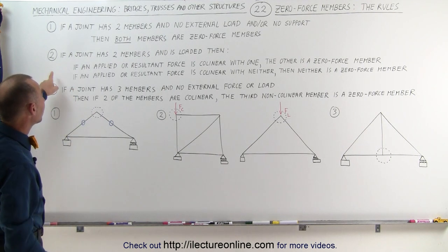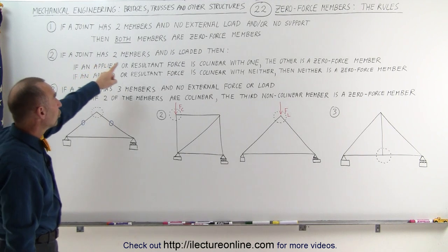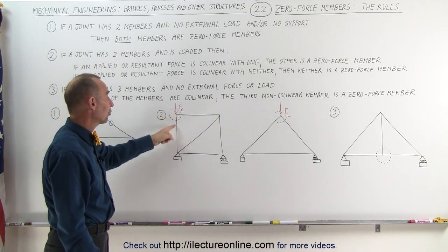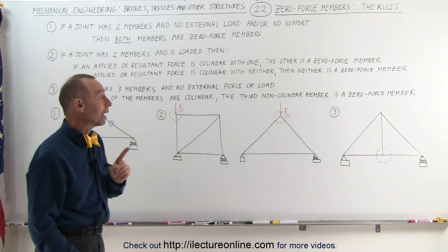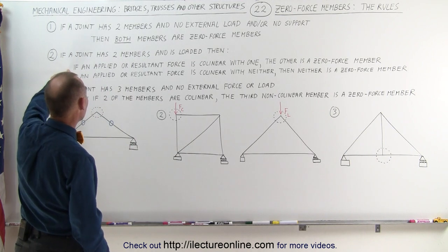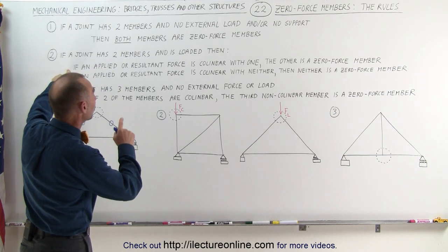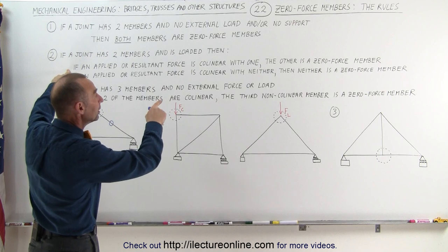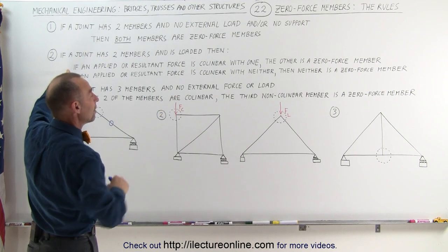The second rule says that if a joint has two members and is loaded, so here we have a joint that has two members, but it does have a load on it, then, the first case, if an applied or resultant force is collinear with one, the other is a zero force member.